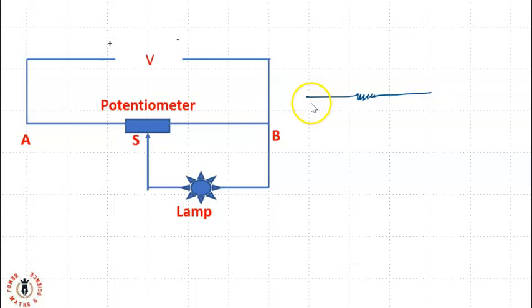But this time around, the potentiometer has a third lead, a third leg this way. Let's call this A and this other side B, and I'll call this S. It's variable because we can change the position, we can vary the position of the third leg.